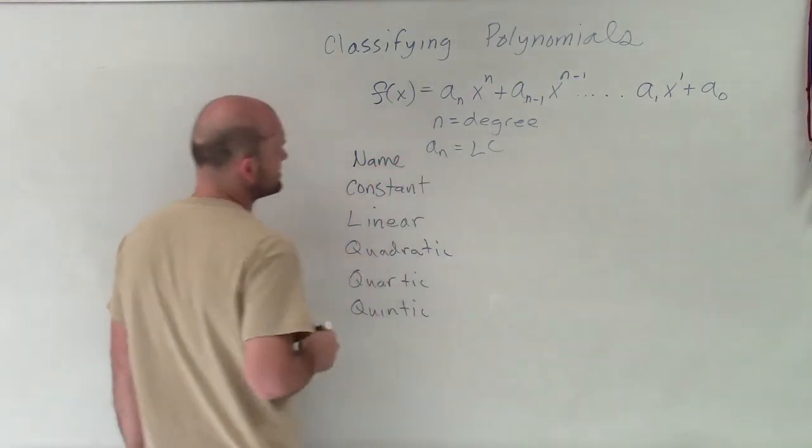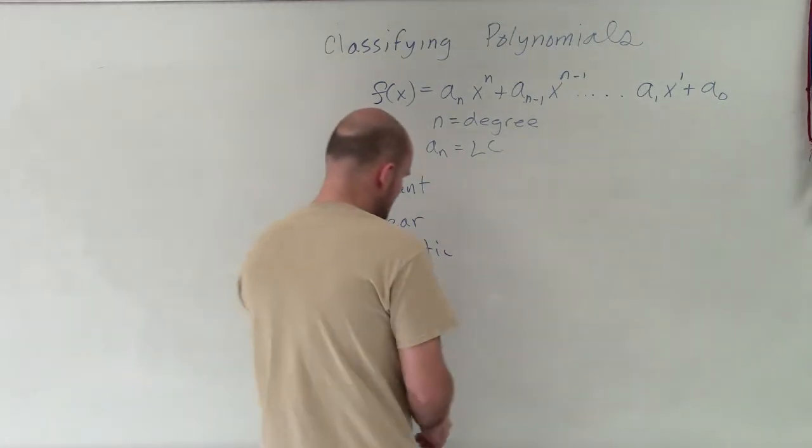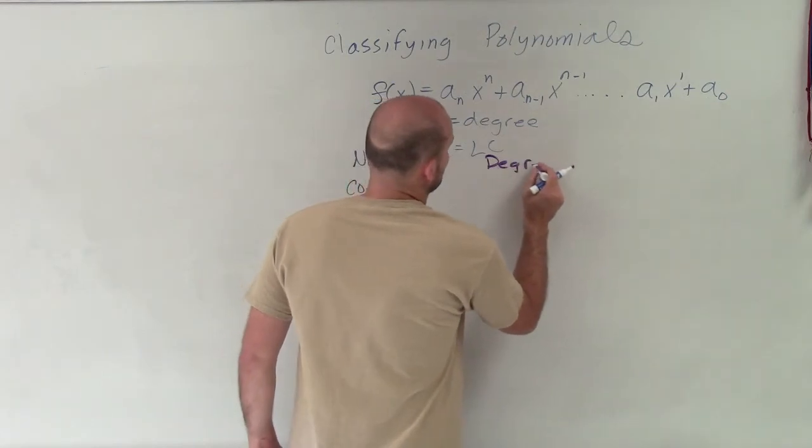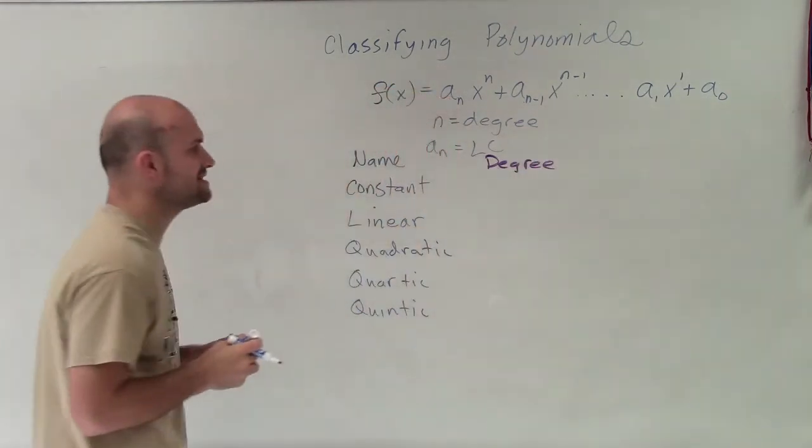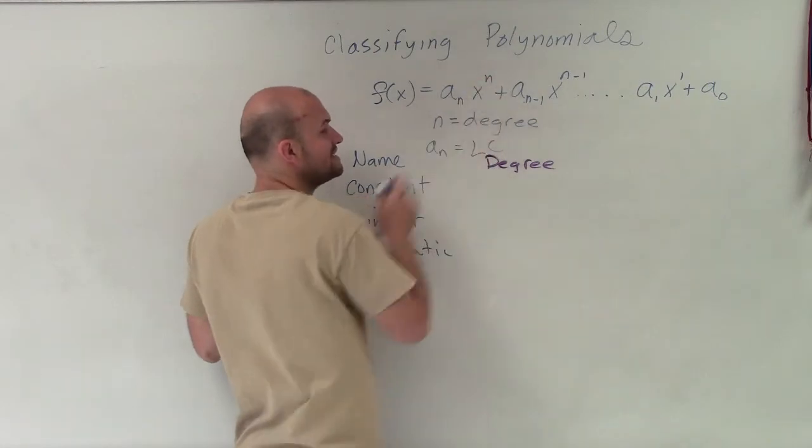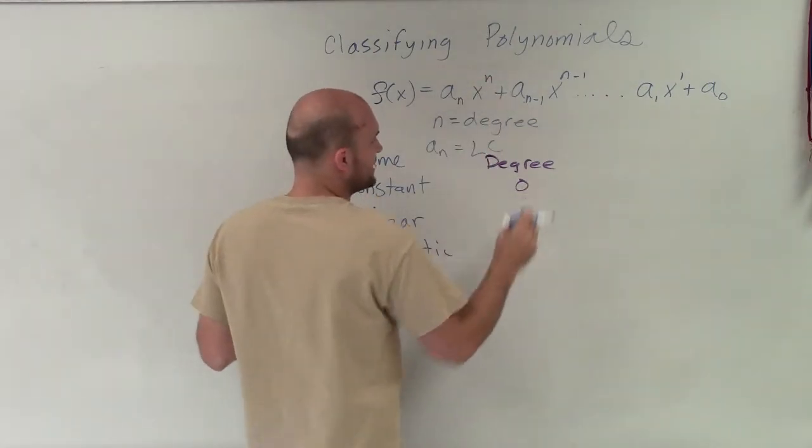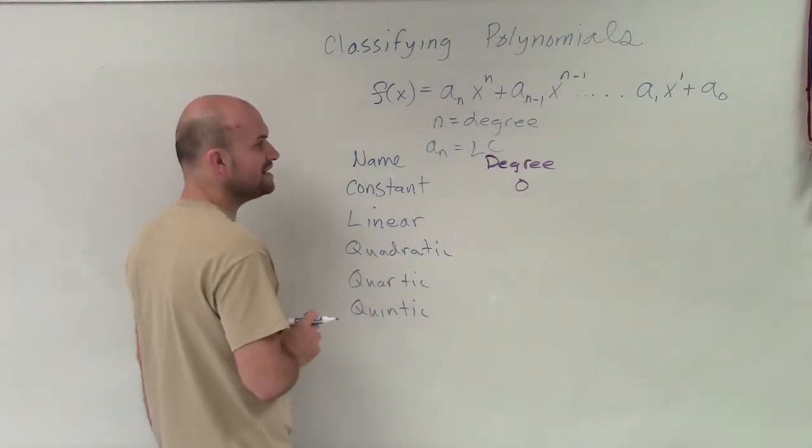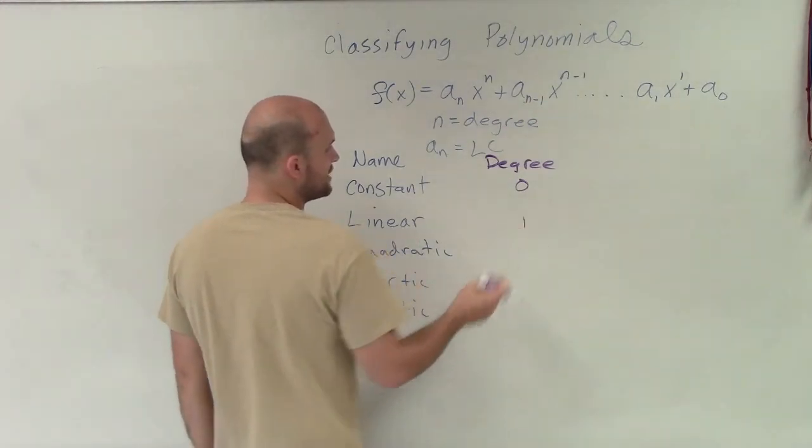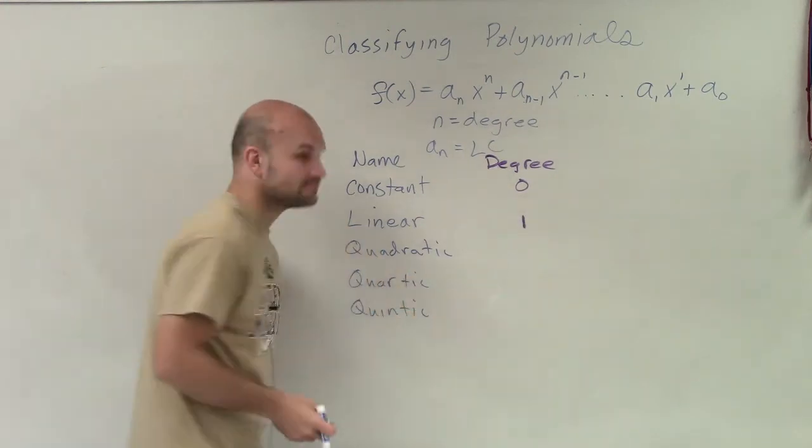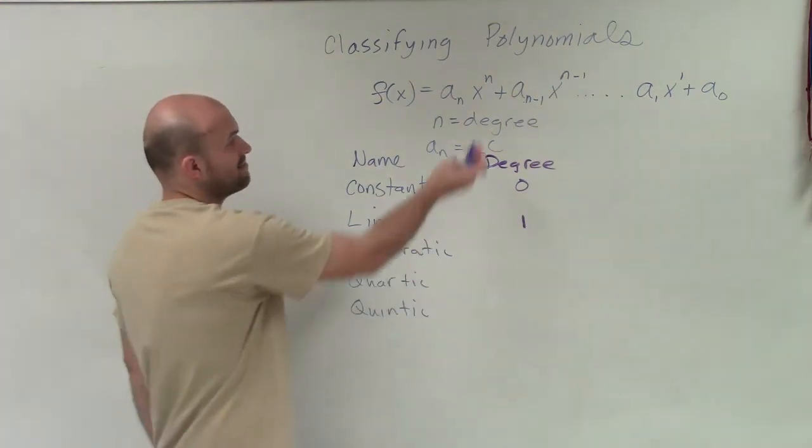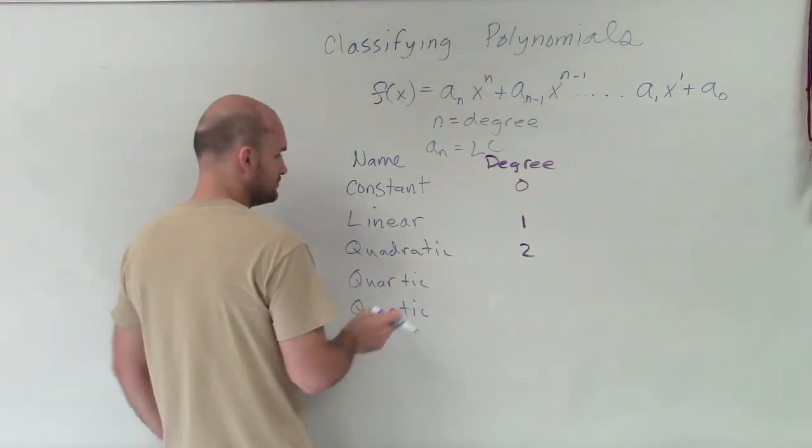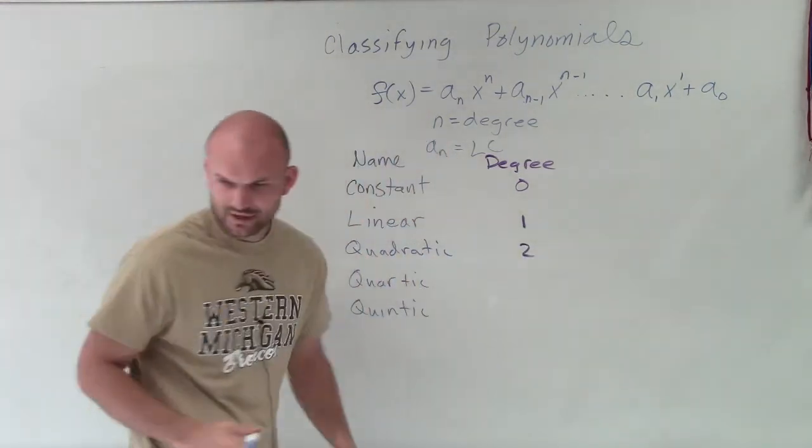Now, what's important about understanding each one of these is understanding the degree for each one. So when we're looking at a degree of a constant function, the degree, which would be your variable raised to what power, that's going to be 0. When we have a linear polynomial, that means the degree is 1, or the degree of the polynomial, that means the largest exponent. When we have a quadratic, the degree is 2.